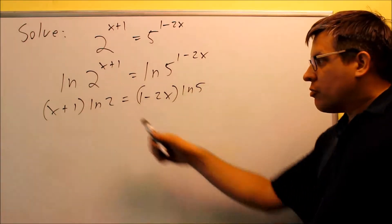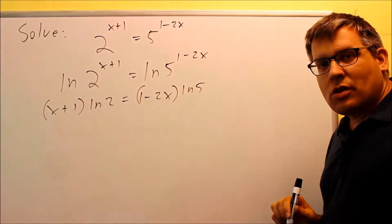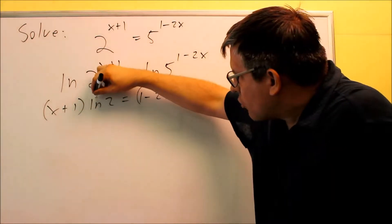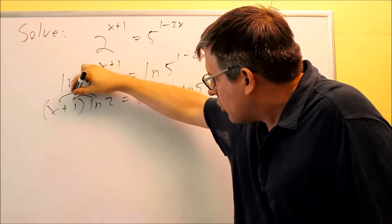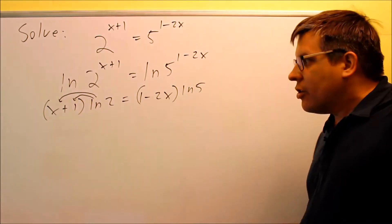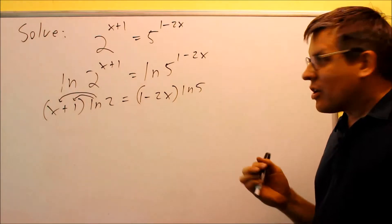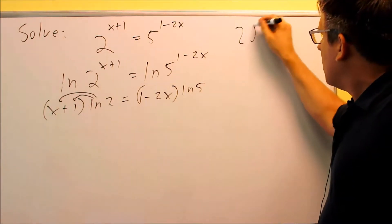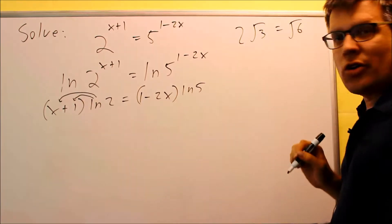What we have to do now is we have to distribute the ln 2 into the parentheses. When you multiply it by x, you're not allowed to take x and multiply it inside and make that ln 2x. It's kind of the same thing. If I have 2 times the square root of 3, I can't make that square root of 6. That doesn't work.